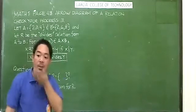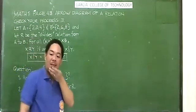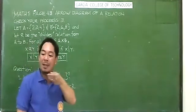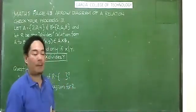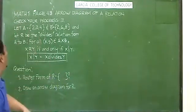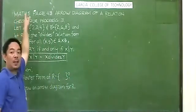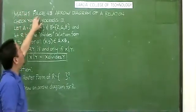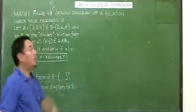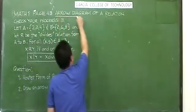Good day everyone. We have here an advanced topic. Continuation of our discussion, we have here the book Mathematics in the Modern World, page 43. Our topic is the arrow diagram of a relation.